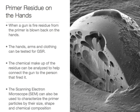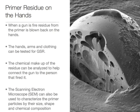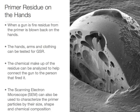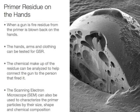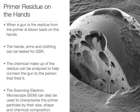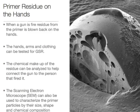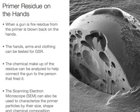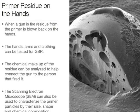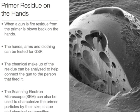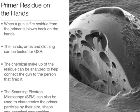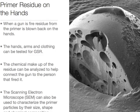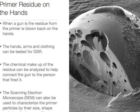Primer residue, also known as gunshot residue, is also a good way to determine who fired the gun and what gun it came from, because the primer residue can be traced back to the gunpowder. Its chemical makeup, its size and shape of its particles, all help you trace back to the gun that fired it.